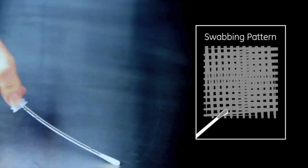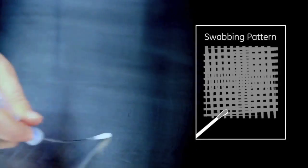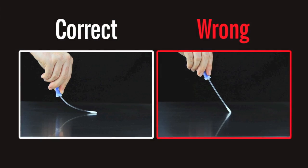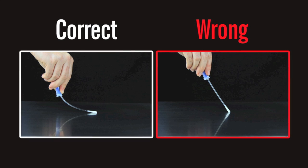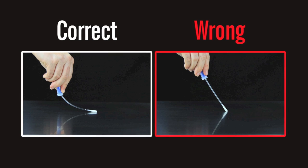Swab a 4x4 inch square area in a criss-cross pattern, swabbing the area with even coverage. Apply sufficient pressure to create flex in the swab shaft. This maximizes sample collection and improves accuracy of test results.